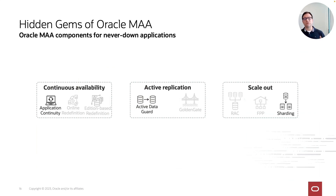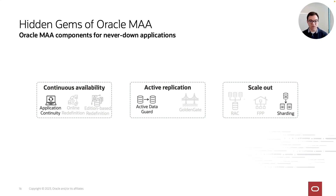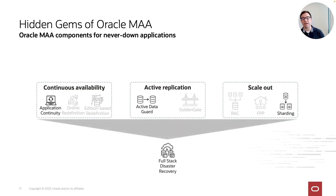I would like to focus on the hidden gems of Oracle MAA today — components that really help you achieve never-down applications. The three I've chosen are: Application Continuity in the context of continuous availability; Active Data Guard as part of active replication; and sharding for massive database scale-out and protection. Last but not least, I want to touch on a new OCI service: Full-Stack Disaster Recovery.